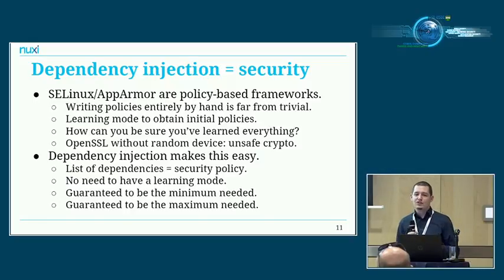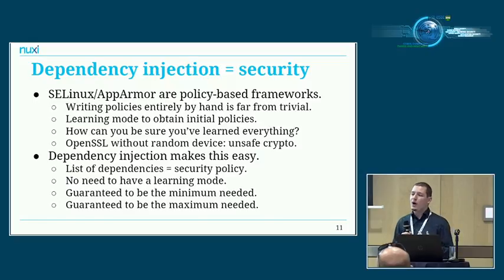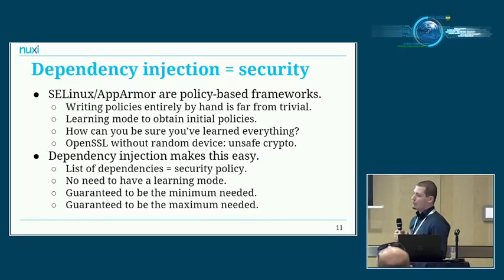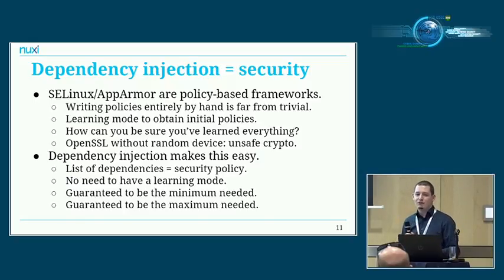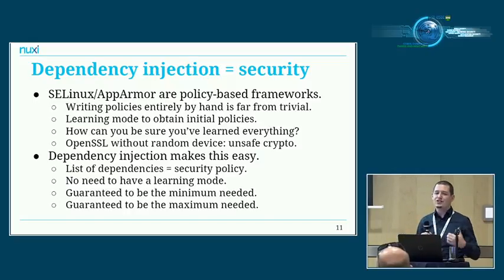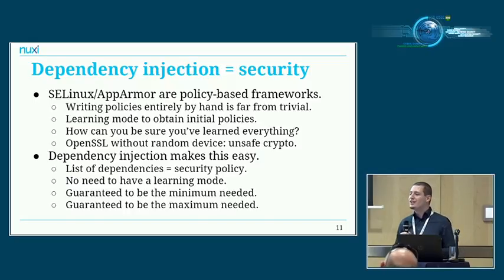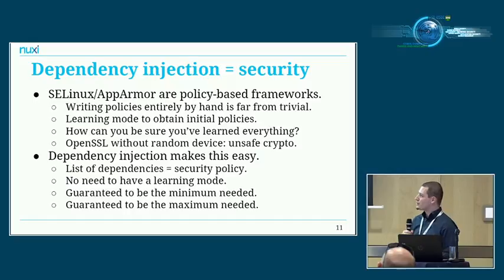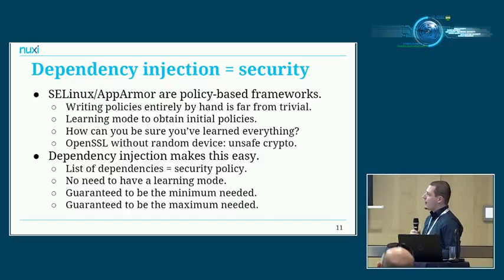One of the most severe things I've noticed is that if you start up an application that uses OpenSSL for its crypto and you forget to whitelist the random device — forget to whitelist access to /dev/urandom or /dev/random — then the crypto of the application suddenly becomes unsafe. OpenSSL just goes on but can't initialize its random number generator, meaning it goes into an almost fully deterministic mode where all the crypto being performed is deterministic.